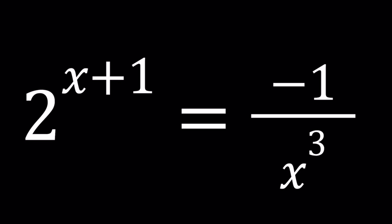Hello everyone. In this video, we're going to be solving a non-standard equation. We have 2 to the power of x plus 1 equals negative 1 over x cubed, and we're solving for x values. Since this is a non-standard equation with an exponential on one side and a rational function on the other side, we're going to use a very special method.